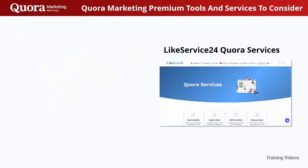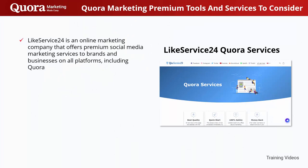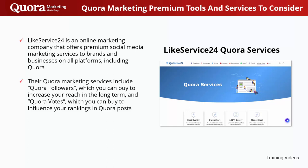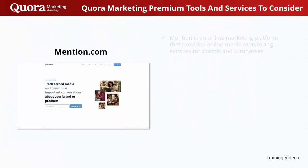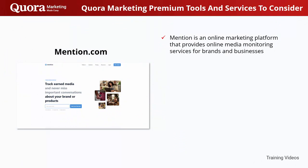Like Service 24 is an online marketing company that offers premium social media marketing services to brands and businesses on all platforms, including Quora. Their Quora Marketing Services include Quora Followers, which you can buy to increase your reach in the long term, and Quora Votes, which you can buy to influence your rankings in Quora posts. The company guarantees the best possible quality and results, a quick start, a 100% safe and proven service platform, and a money-back guarantee.